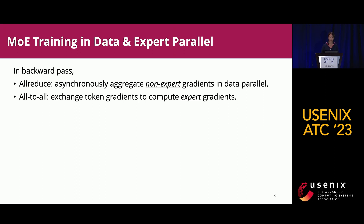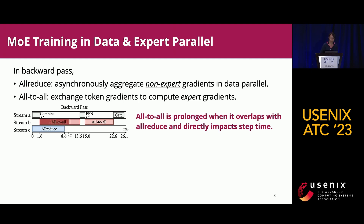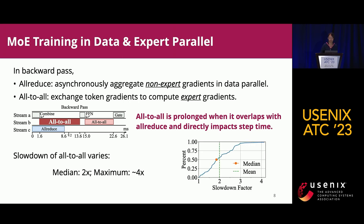In training, the backward path means two communication operations are involved in data and expert hybrid parallelism: all-reduce to aggregate non-expert gradients, and all-to-all to exchange token gradients for computing expert gradients. From the timeline profile, when these two operations overlap, they share resources including GPU SMs and network bandwidth. Both all-to-all and all-reduce are prolonged due to resource sharing, and the slowdown of all-to-all directly lengthens training step time because it is a blocking operation. The slowdown factor varies and cannot be determined due to the black-box nature of GPUs; the median slowdown is 2x but can reach 4x.